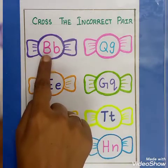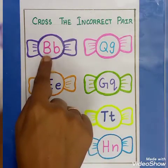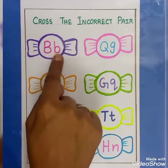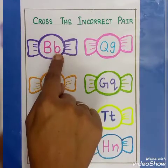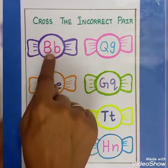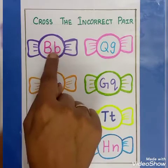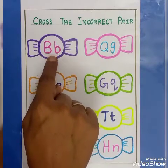This is capital letter B. This one is small letter B. This pair is correct? Yes. This is a correct pair.